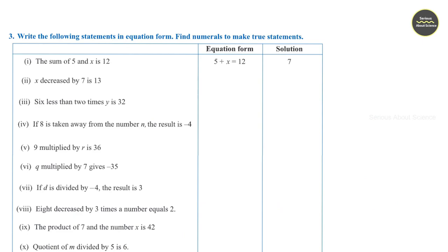Section 3: Write the following statements in equation form, then find numerals to make true statements. First question is already worked out: the sum of 5 and h is 12, so we write 5 plus h is equal to 12, and solving gives h is equal to 7.